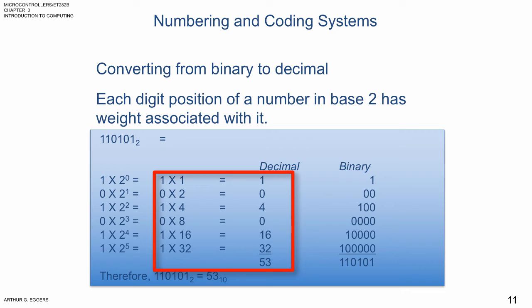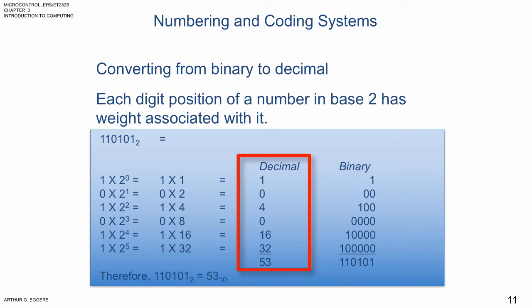So 1 times 1 gives us a decimal 1, 0 times 2 gives us a decimal 0, 1 times 4 gives us a decimal 4, 0 times 8 gives us a 0, and then 1 times 16 and 1 times 32 giving us 16 and 32. So all we have to do then, again, in the column, the decimal column, add those numbers back together, 1 plus 4 plus 16 plus 32. We have the decimal equivalent of, in the binary column, 110101 in binary, and therefore we have the number in base 10 or decimal of 53.